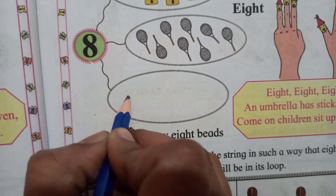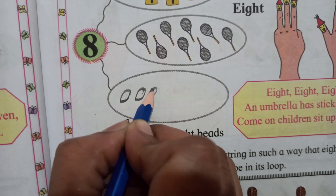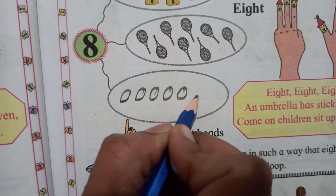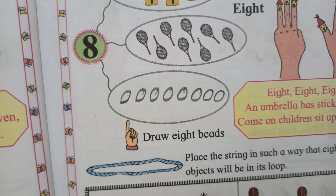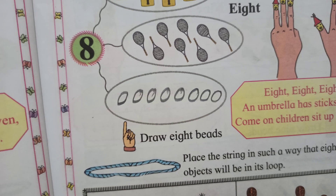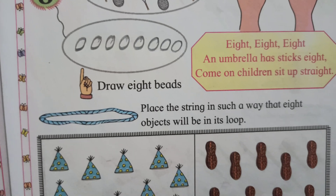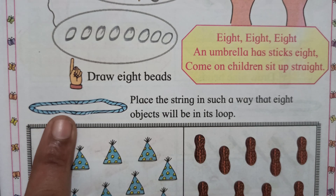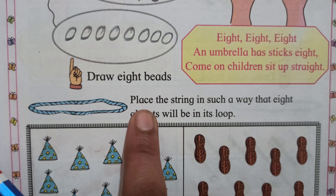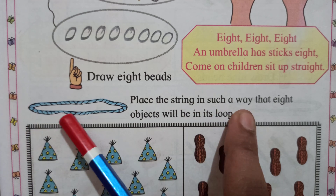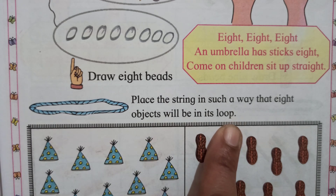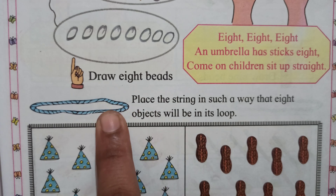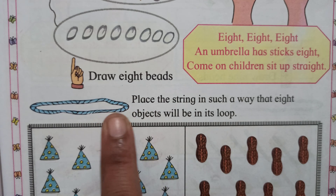Yes, I'm finished — you do it. Fast, fast! Who finished? Keep your pencil aside and see here. Pay attention. Here is a string, and the textbook says: place the string in such a way that 8 objects will be in its loop. Use this string and place 8 objects.